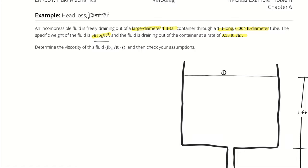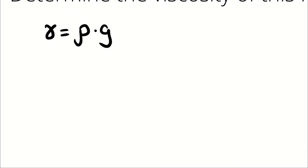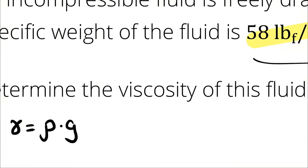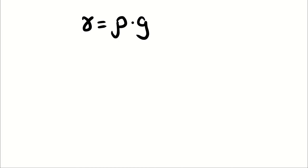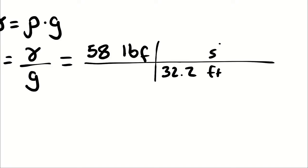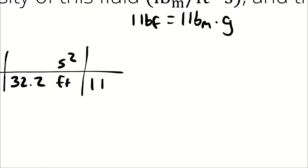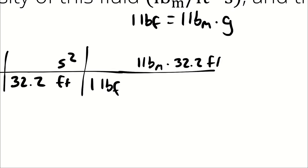Let's start by calculating density. If specific weight equals density times gravity, and we know the specific weight is 58 pounds of force per cubic foot and assume standard gravity, we can take that specific weight divided by gravity to calculate the density. Remember that 1 pound-force equals 1 pound-mass times 32.2 feet per second squared.